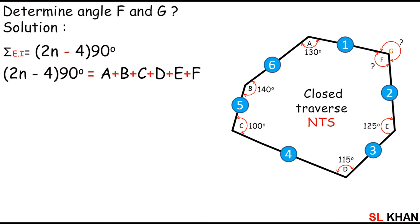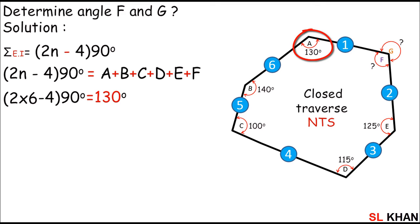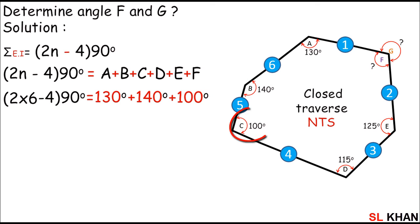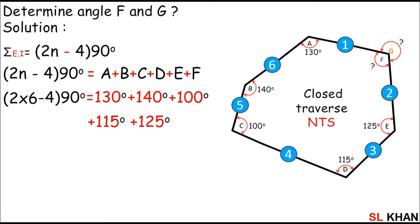So 2n means 2 times 6, minus 4, times 90 equals A. A is 130 degrees, plus B which is 140, plus C which is 100, plus D which is 115 degrees, plus E which is 125 degrees, and lastly plus F.